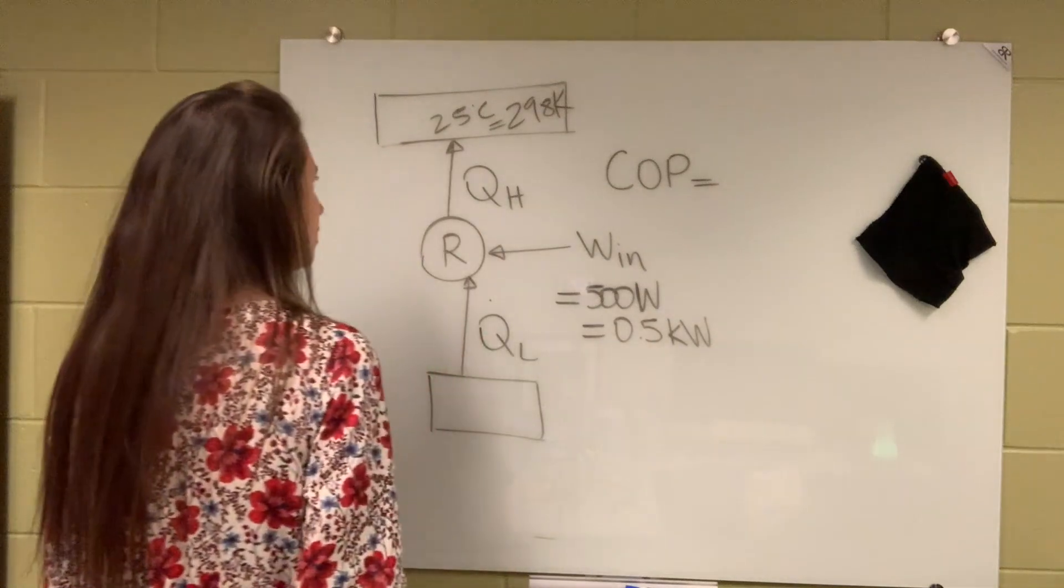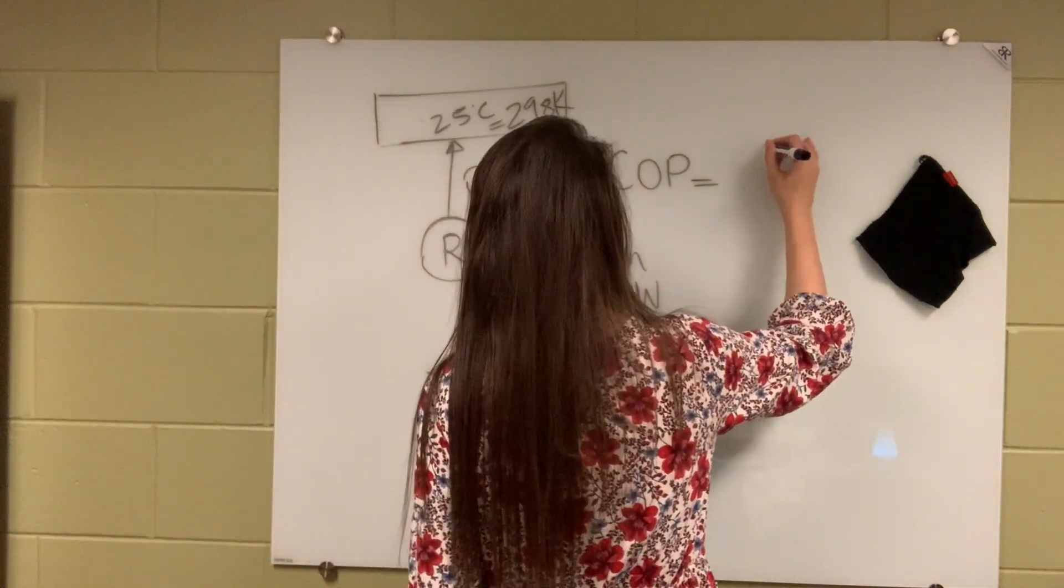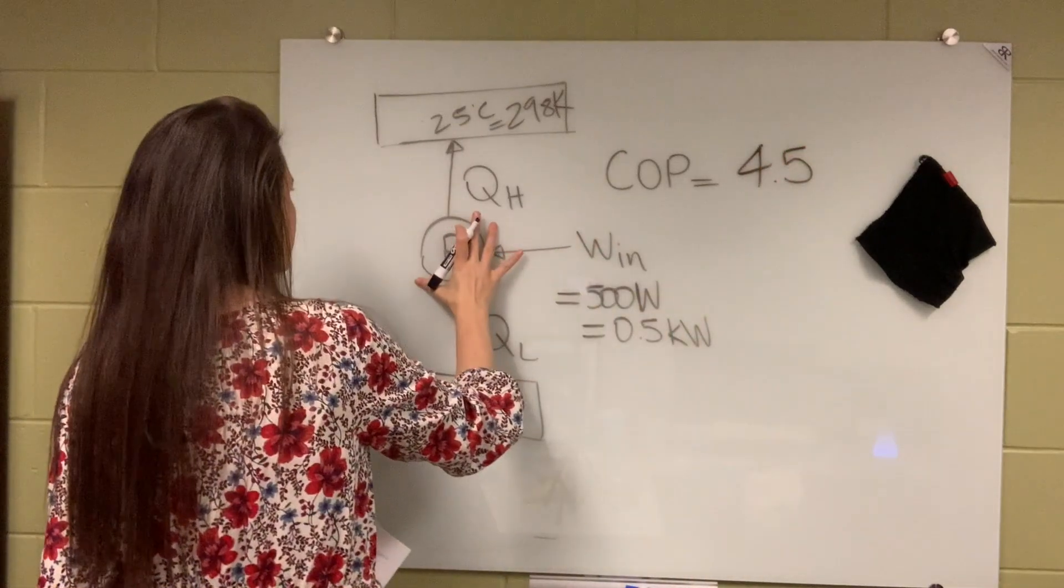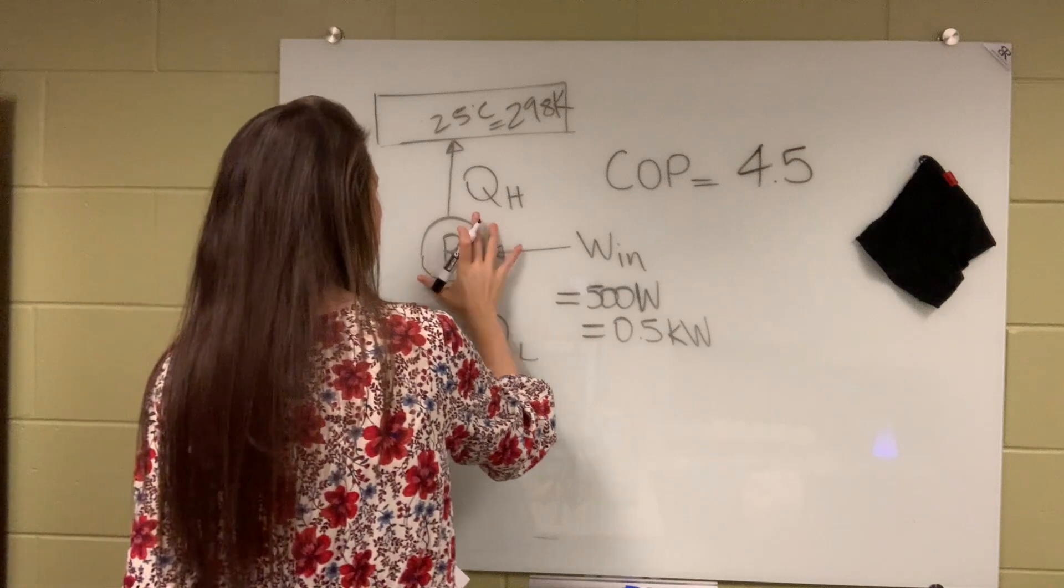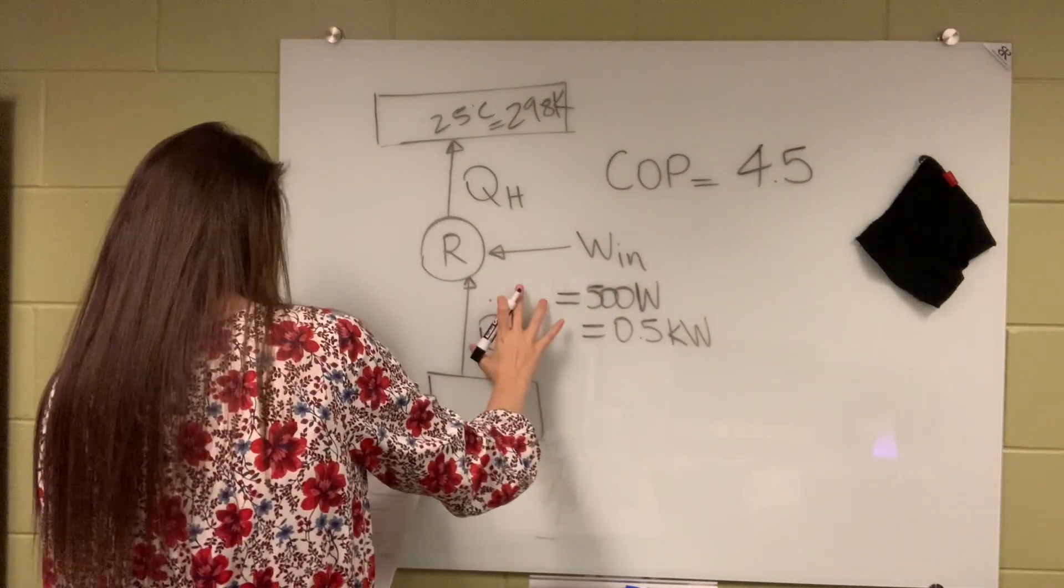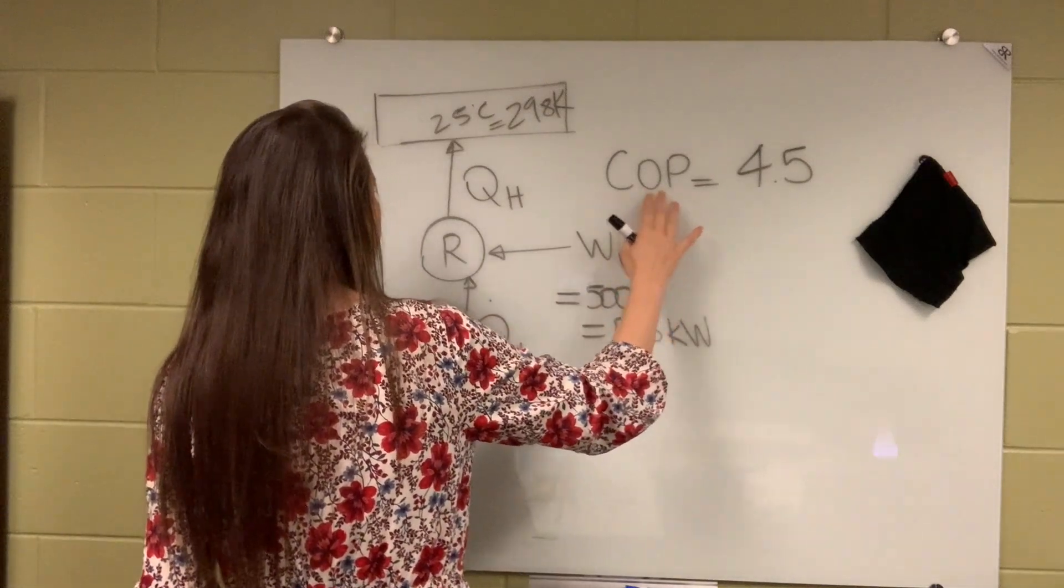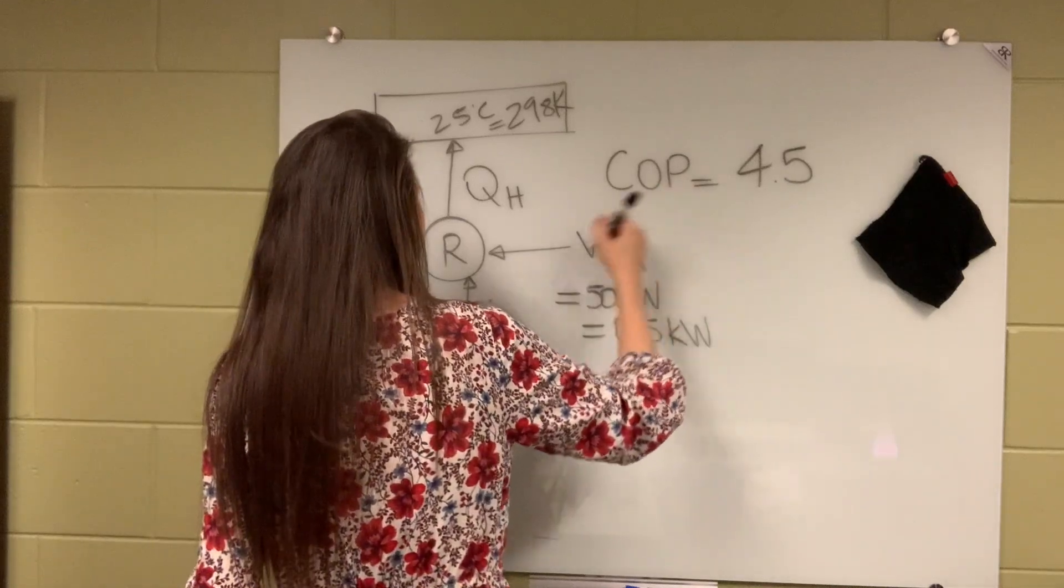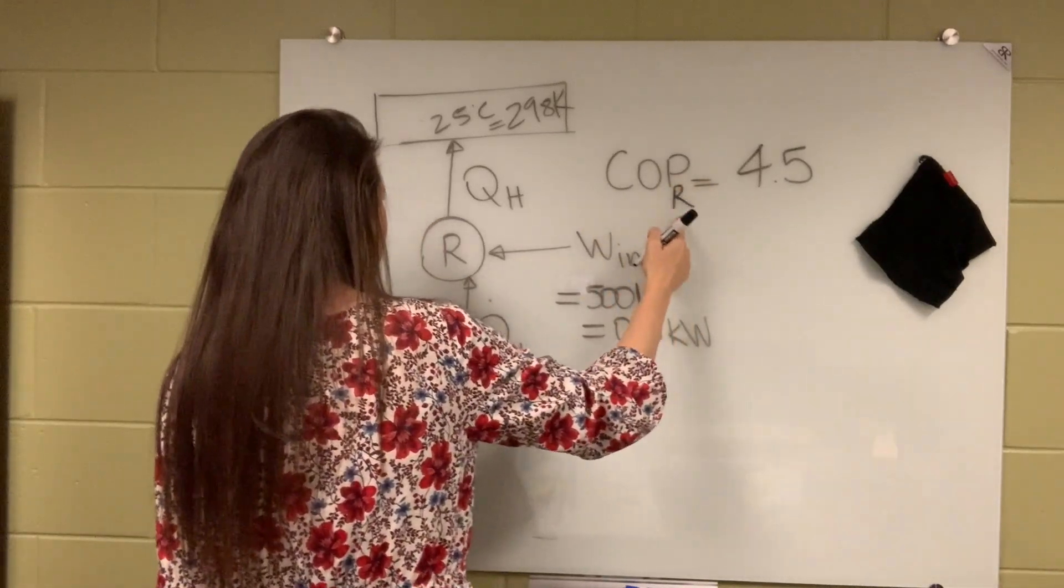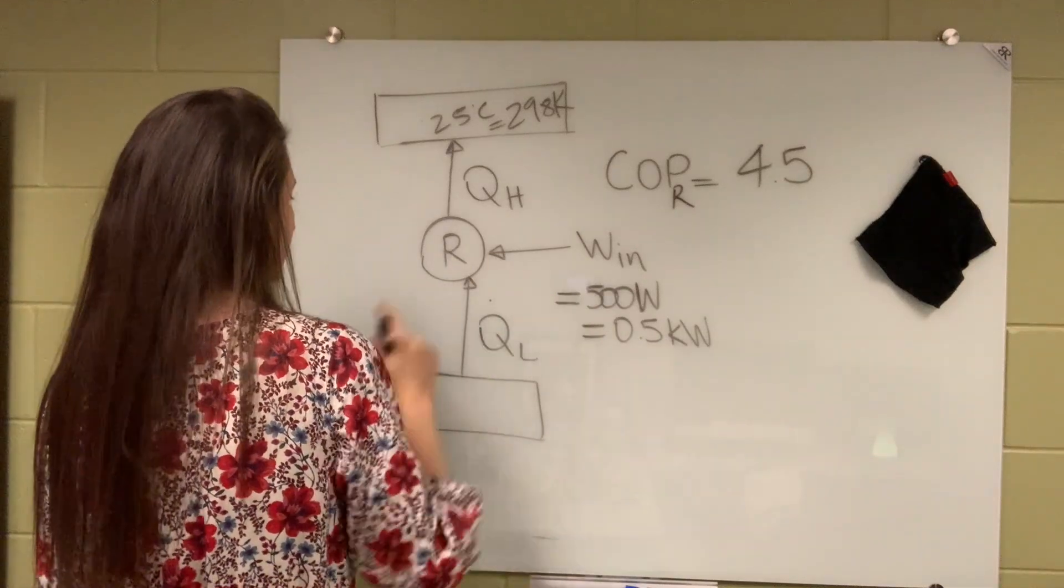So COP is therefore given to us here. It says 4.5. And since this is given for this refrigerator, what I can do, use this COP to calculate the heat interaction. Because we know the formula for the COP for a refrigerator. And to remember that COP belongs to the refrigerator, put a subscript R. And now let's calculate it.